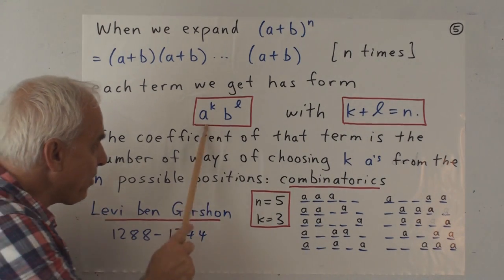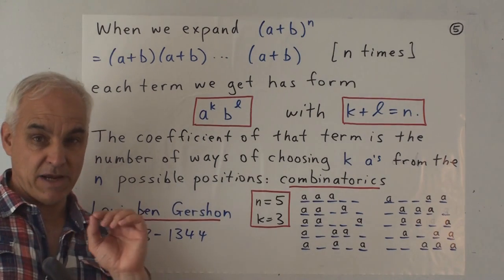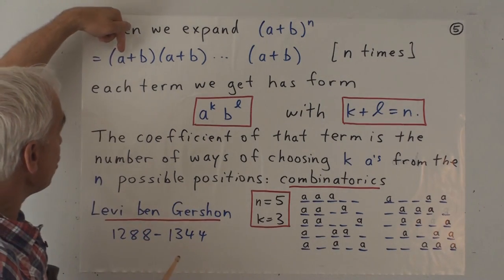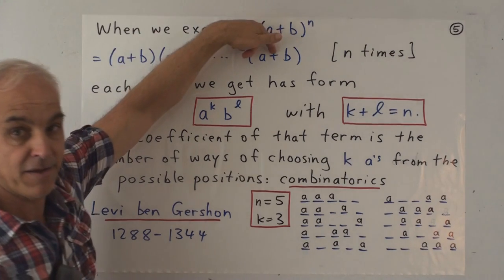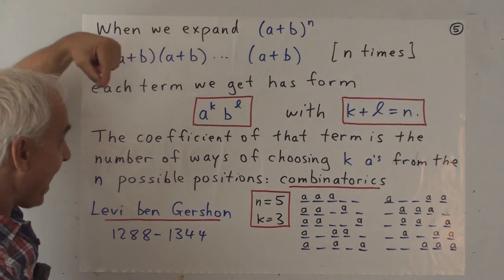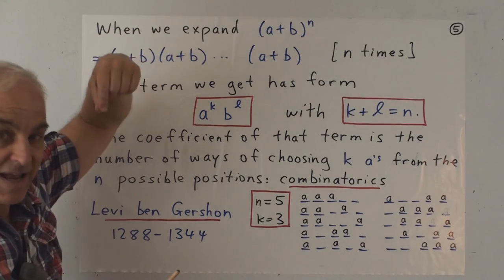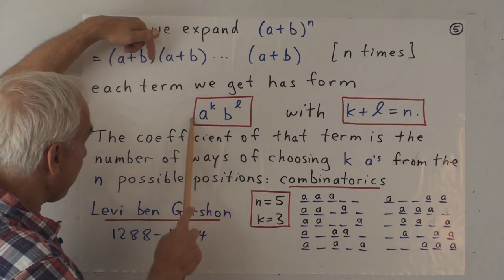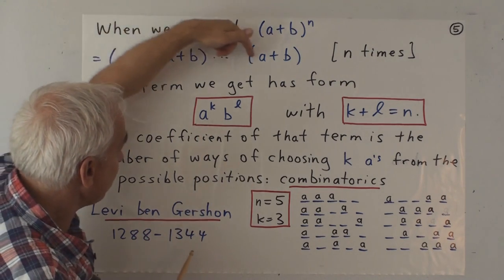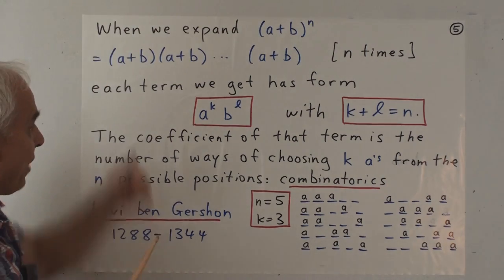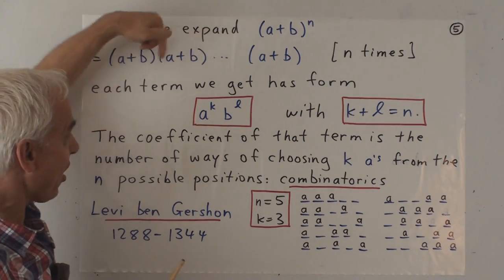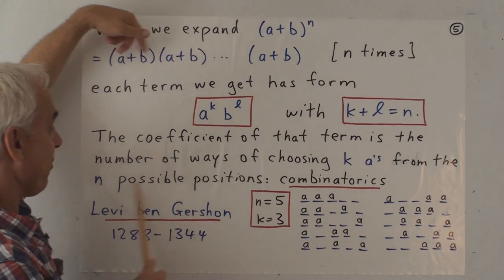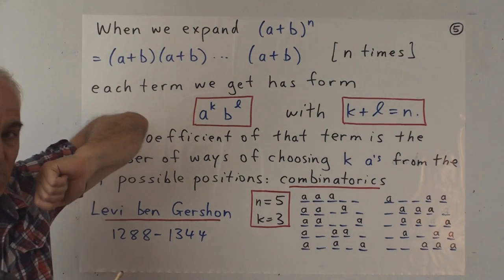Well, the coefficient is then the number of ways of choosing k a's from the n possible positions. So the number of times this particular term appears corresponds to the number of ways we can choose these n choices with a appearing k times. So the k a's that have to appear here can be from any one of these n positions. And once we know how many ways there are of choosing k from n, then we have that coefficient.